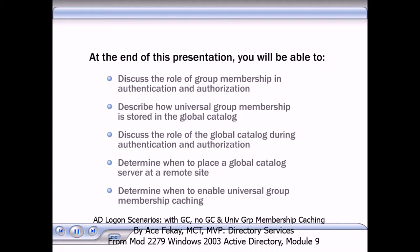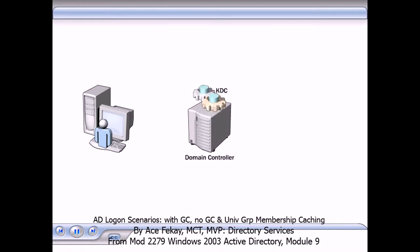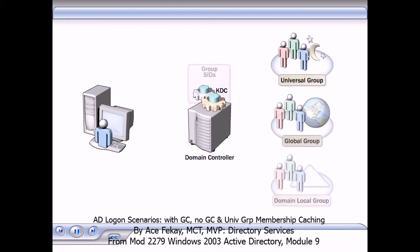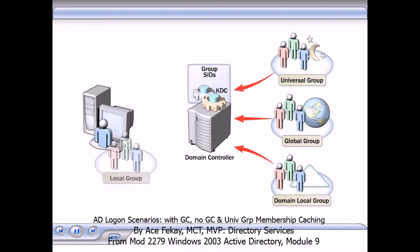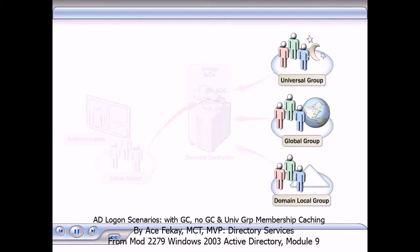Group membership is an essential part of user authentication and authorization. When a user attempts to log on, the KDC or Key Distribution Center on the domain controller that authenticates the user's logon must provide the SIDs, or security identifiers, for each domain-based group that the user is a member of. These SIDs, and the SIDs for local groups that the user is a member of, are used to authenticate the user and provide access to resources.